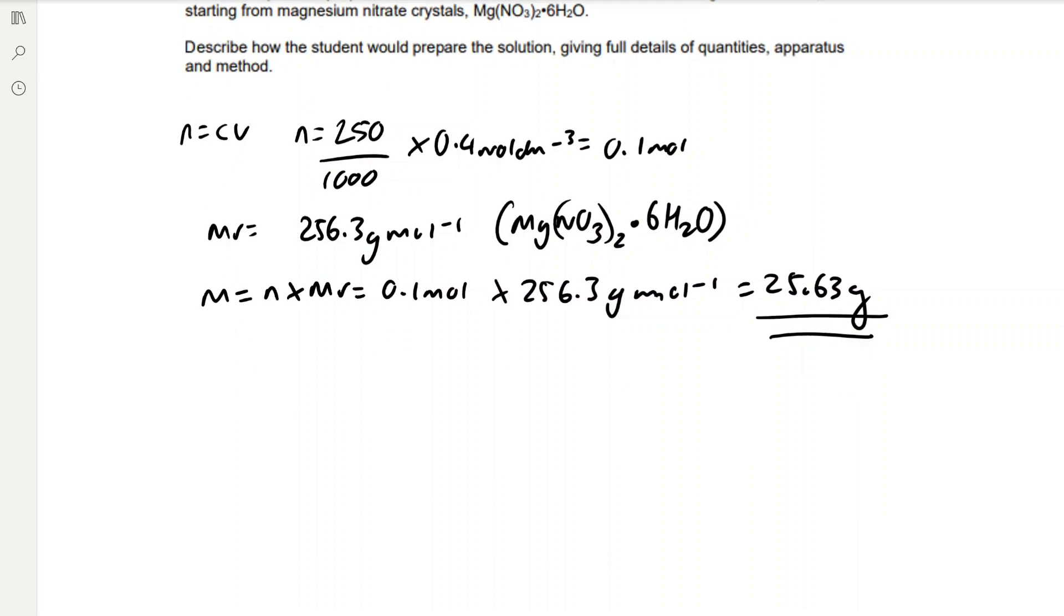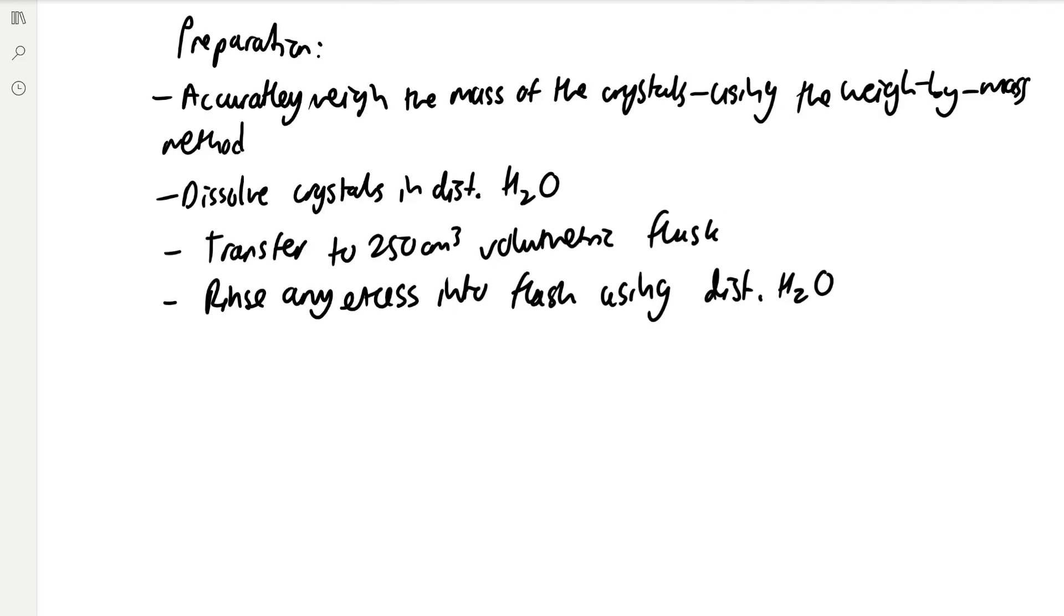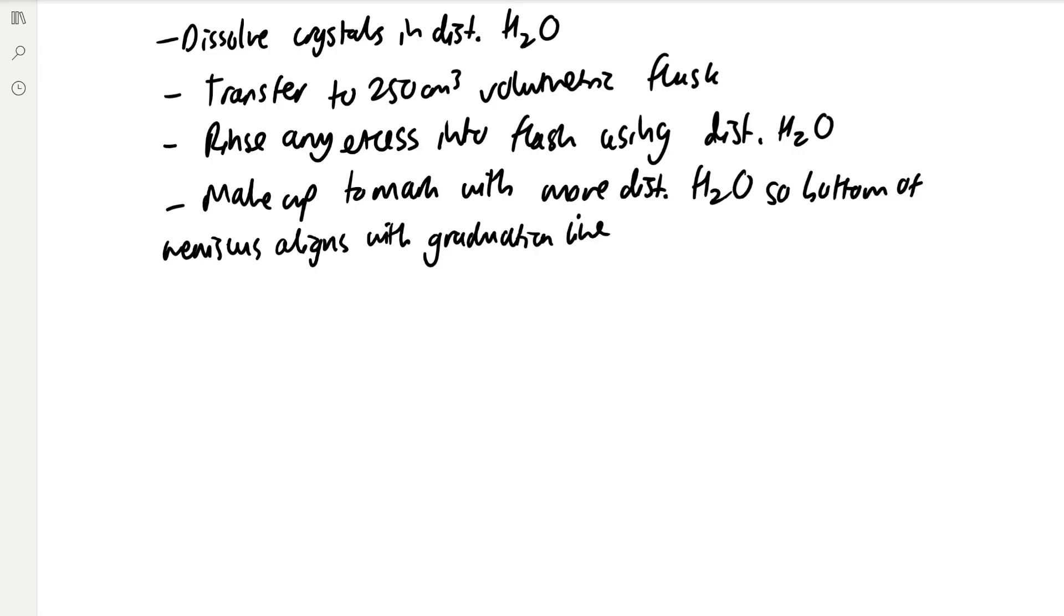And then to prepare our standard solution, we first need to accurately weigh the mass of the crystals using the weigh by mass method. Then you need to dissolve the crystals in distilled water and transfer the crystals to a 250 centimetres cubed volumetric flask. Volumetric flasks have been specifically calibrated to hold a precise volume of solution at room temperature and pressure. You then need to rinse any excess remaining solid from your beaker and your weighing boat into the flask using distilled water. And then carefully make it up to the mark with more water, so that the bottom of the meniscus aligns with the graduation line. And to help you do this carefully, you can use the dropper at the end. You can then stopper and invert the flask to help it mix thoroughly.